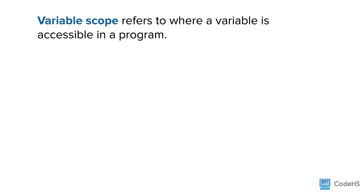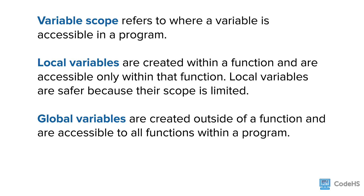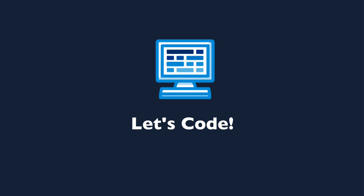So to summarize: variable scope refers to where a variable is accessible in a program. Local variables are created within a function and are accessible only within that function. Global variables are created outside of a function and are accessible to all functions within a program. Parameters and return values enable us to pass local variable information between functions. Now that you know more about variable scopes, you can have more control of how and where you use variables in your programs. Let's take a look at an example together in the editor.